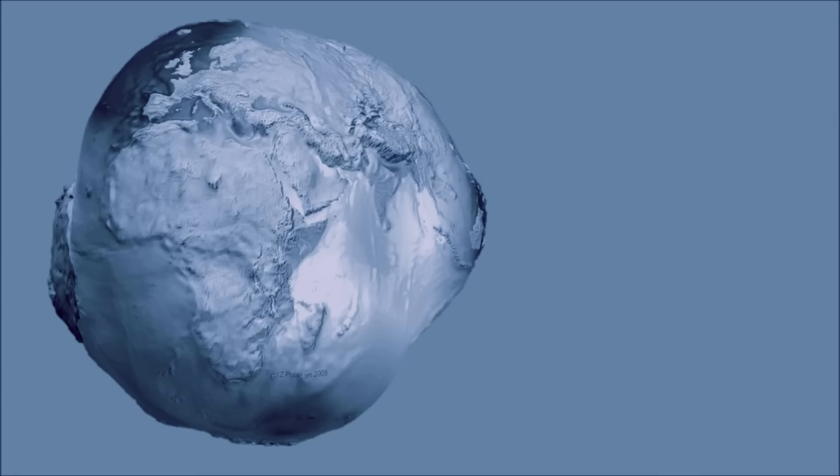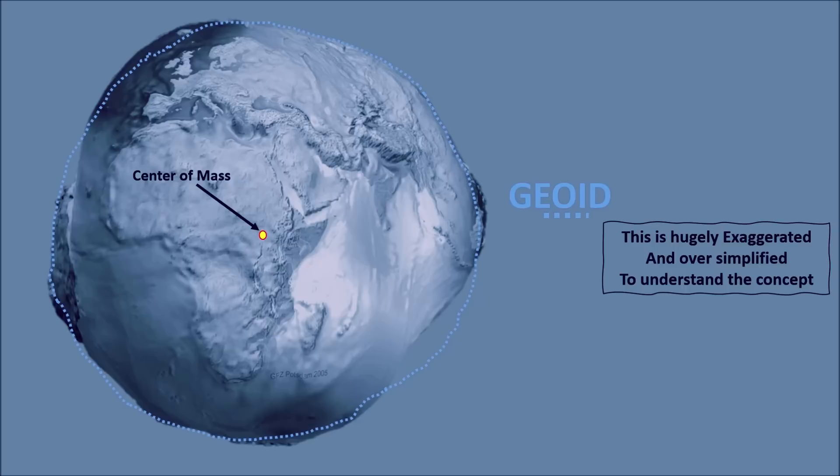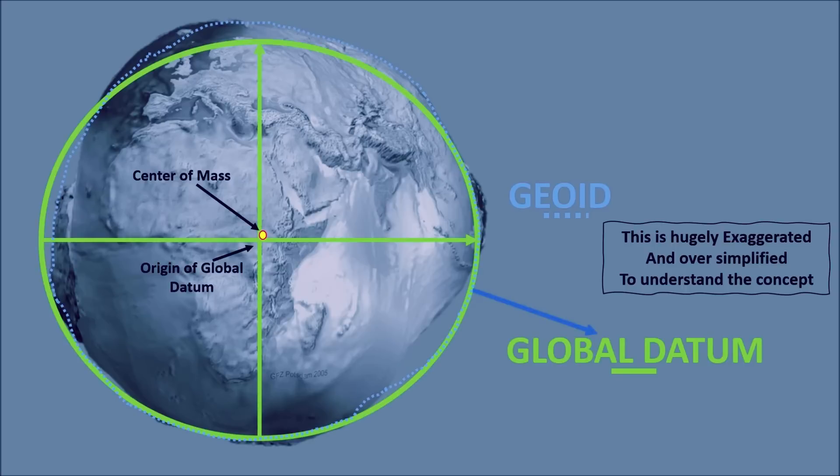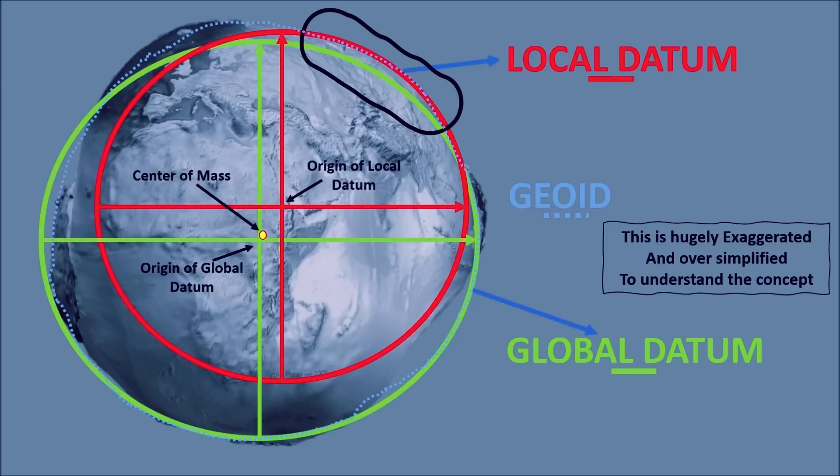So this is an actual earth gravity model and this is a geoid which roughly follows the local topography. And this is a global datum. Let's look at this marked area where the spheroidal surface has a big mismatch with the geoidal surface. Let's bring in the local datum made for only that region. See here the datum surfaces match very nicely. Let's zoom in on that area, shall we?